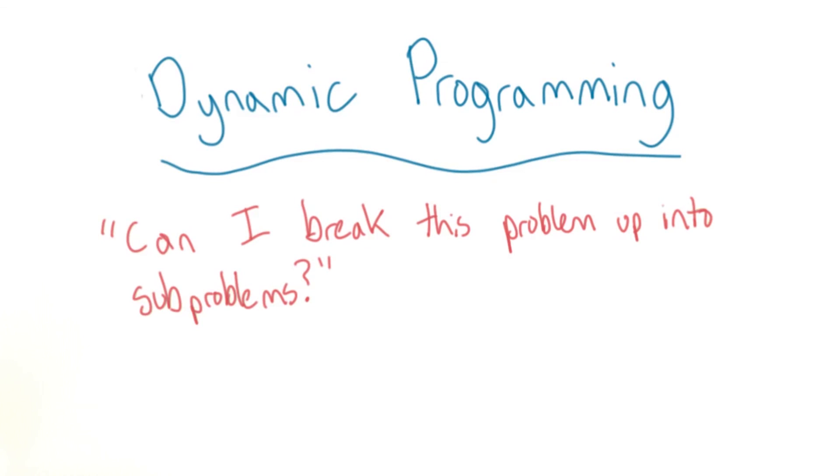One thing you need to look out for is a complicated problem that seems to require trying every combination to find the solution. You need to ask yourself, can I break this problem into subproblems? If the answer is yes, then you've got a problem with a dynamic programming solution.